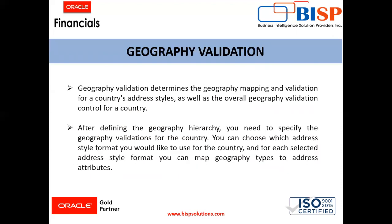After that, we have to define the validation by determining the geography mapping and validation for a country's address style, as well as the overall geography validation control for a country. After defining the hierarchy, we need to specify the validation. We'll choose the address style and specify the mandatory fields for any address attributes — all of that can be done under geography validation.